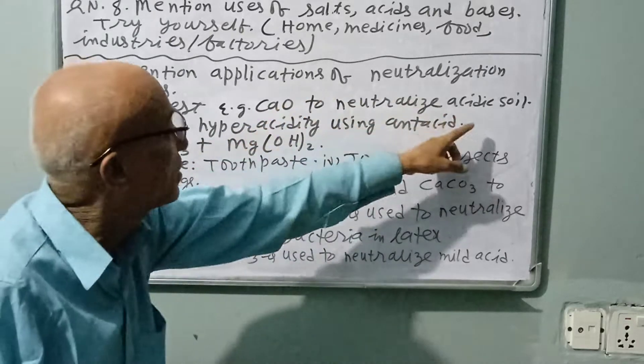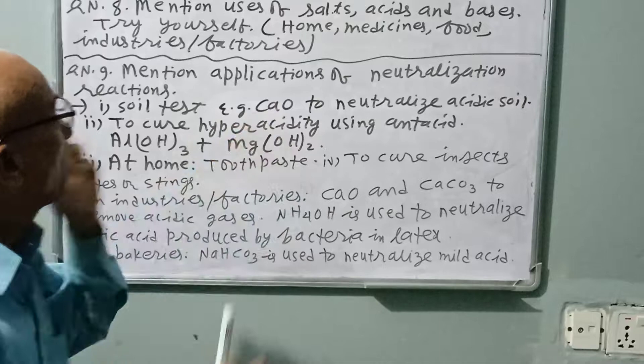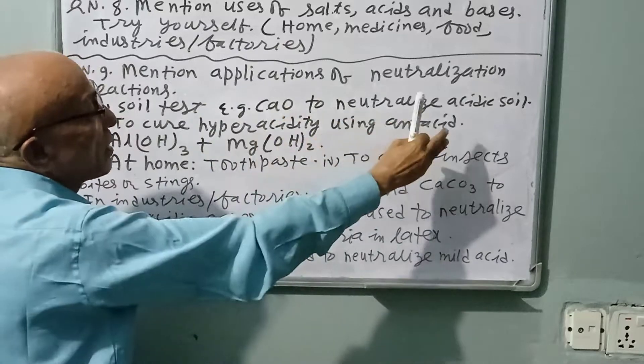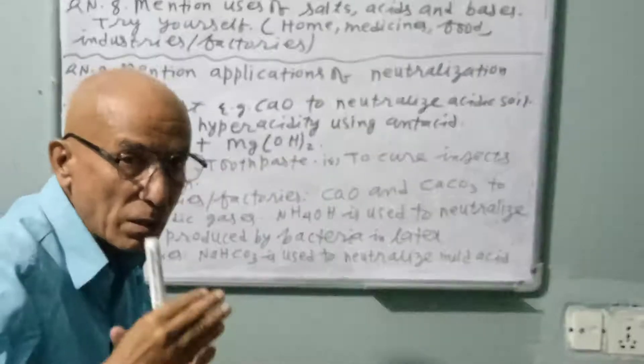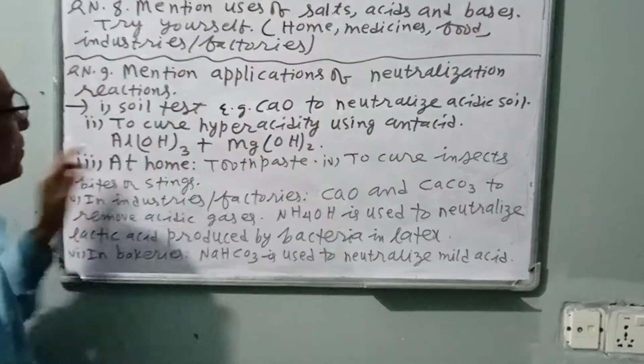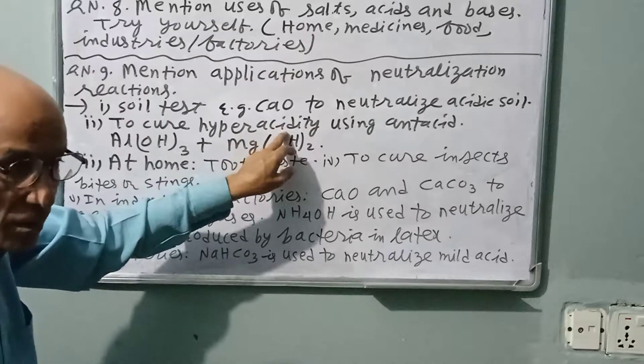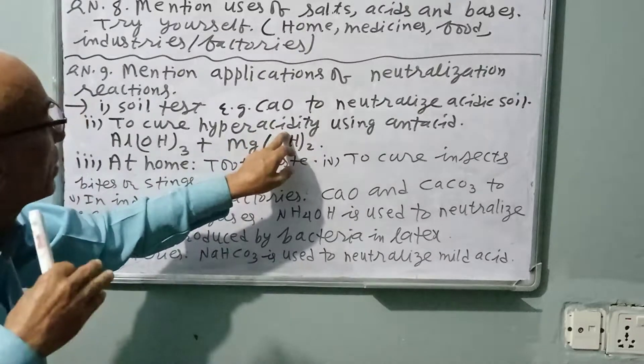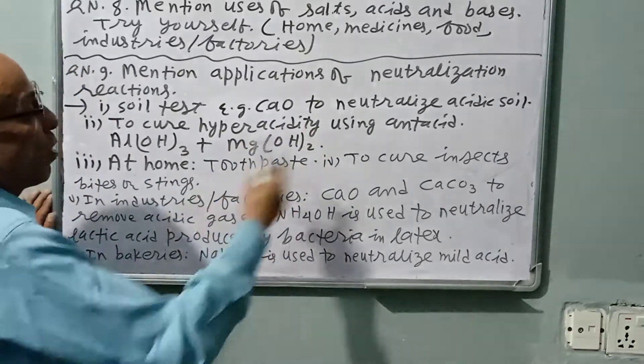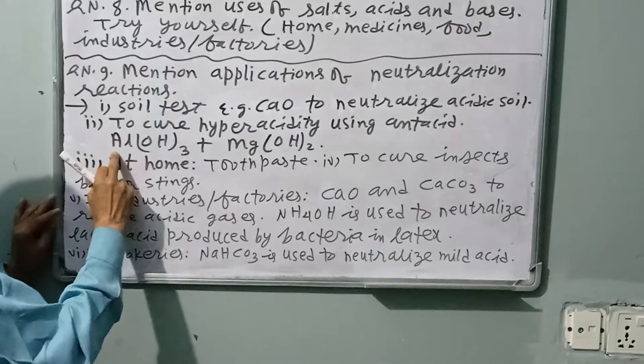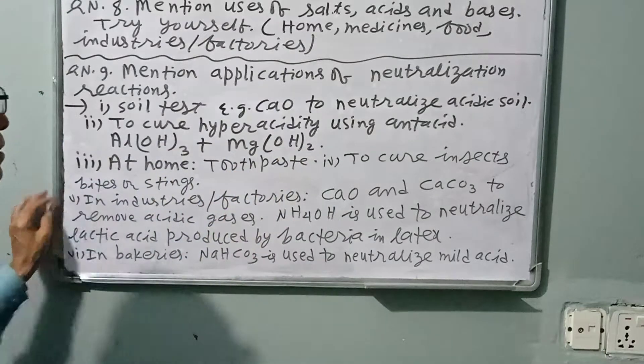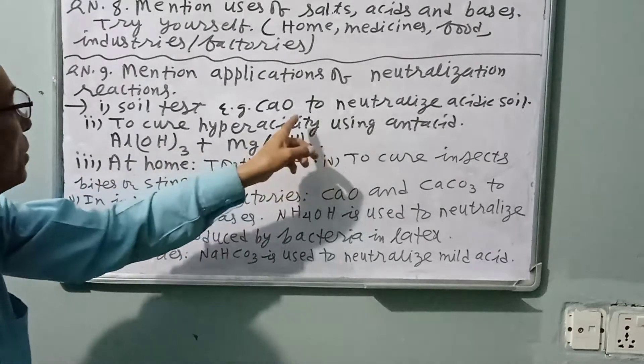Number two: To cure hyperacidity using antacid. Hyperacidity or gastritis, don't say gastric, it is called gastritis or hyperacidity. This is cured using antacid. Antacid is a mixture of aluminum hydroxide, Al(OH)3, and magnesium hydroxide, Mg(OH)2. It is very important to cure hyperacidity.